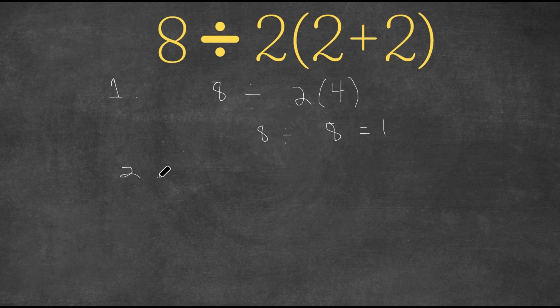So around 50% of people said that you should do that. And the other 50% said that when you're given this, you should first divide the 8 and the 2. So 8 divided by 2, as we all know, is 4.